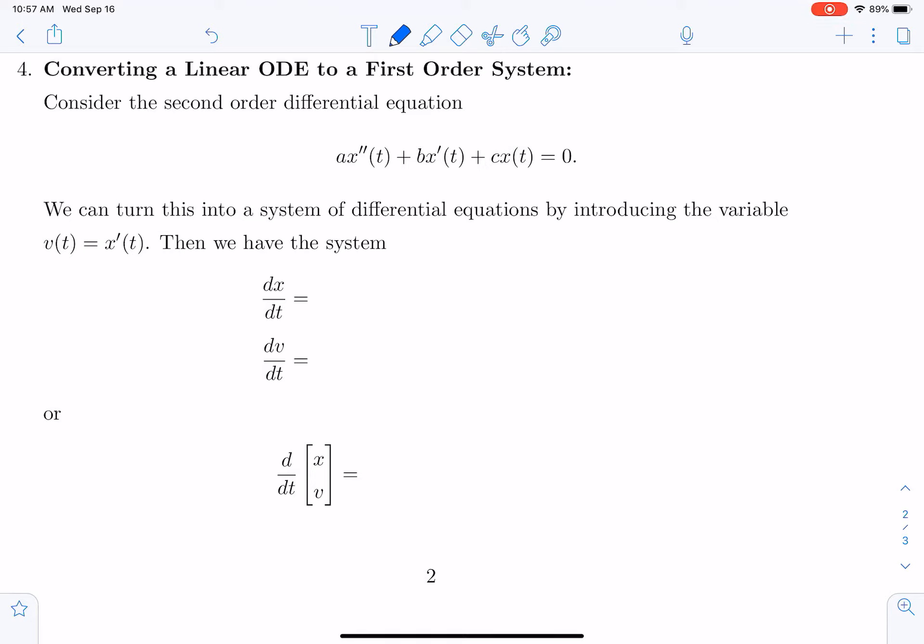Essentially, we can let V equal dx/dt. We can think about x as being position and V as being the velocity. So dx/dt we can say is equal to the velocity, which is V.